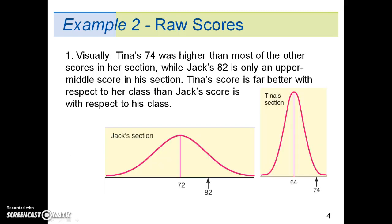Visually, Tina's 74 was higher than most of the other scores in her section, while Jack's 82 is only an upper-middle score in his section. Tina's score is far better with respect to her class than Jack's score is with respect to his class. However, we need to look at this statistically, and to do that, we need to calculate the standardized z-score.